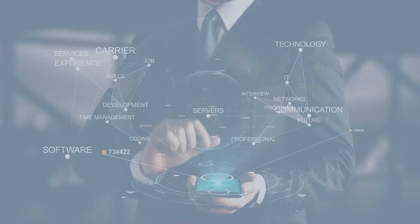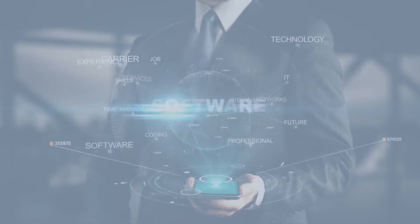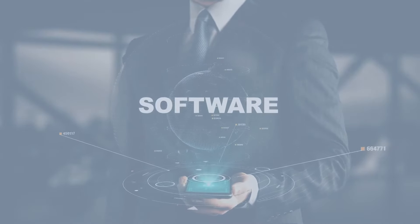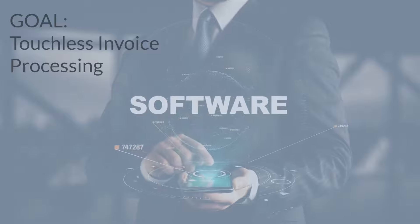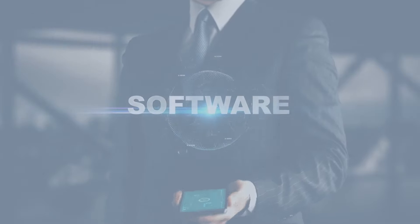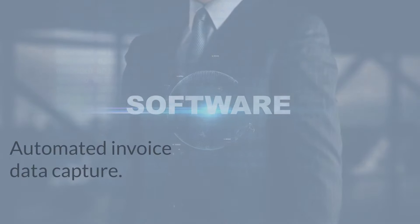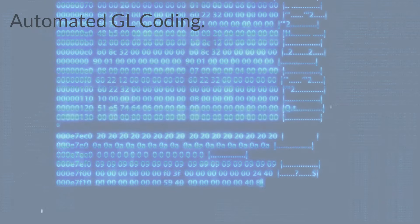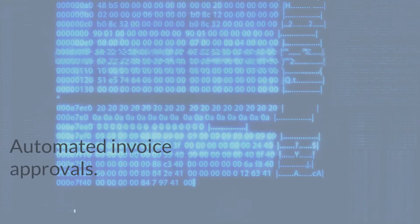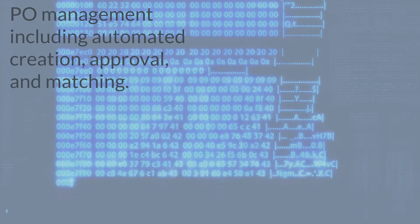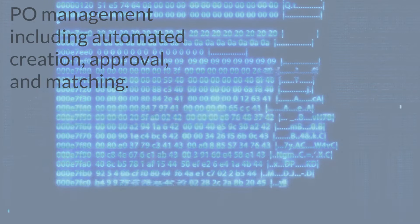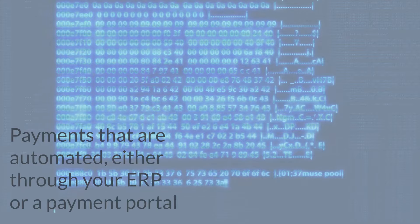So let's talk about what functionality you should look for in AP automation software. The goal here is to make invoice processing as touchless as possible. Here are your requirements: automated invoice data capture, automated GL coding, automated invoice approvals. And if your company does PO purchasing, then you definitely want to automate your PO process. Finally, you want software with tight integrations to your ERP or accounting system.